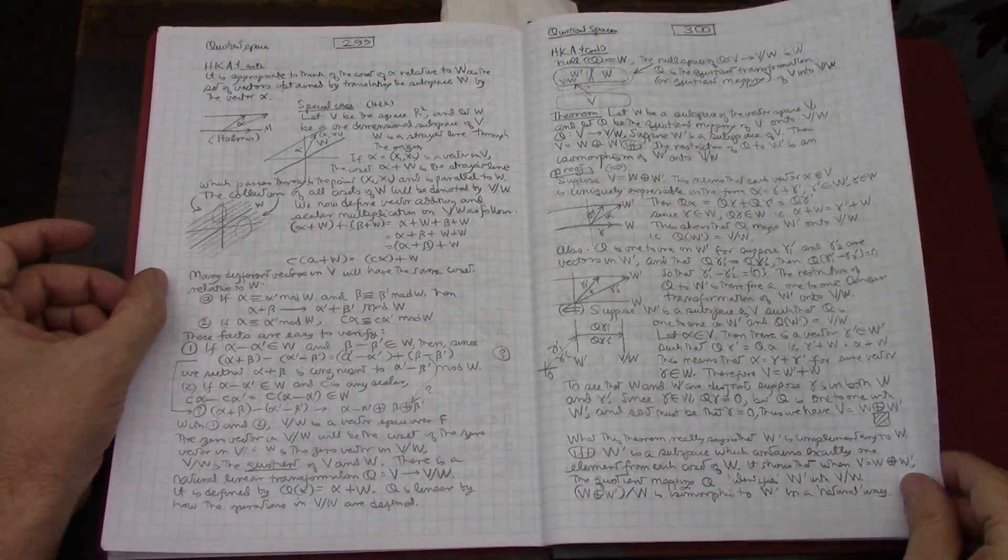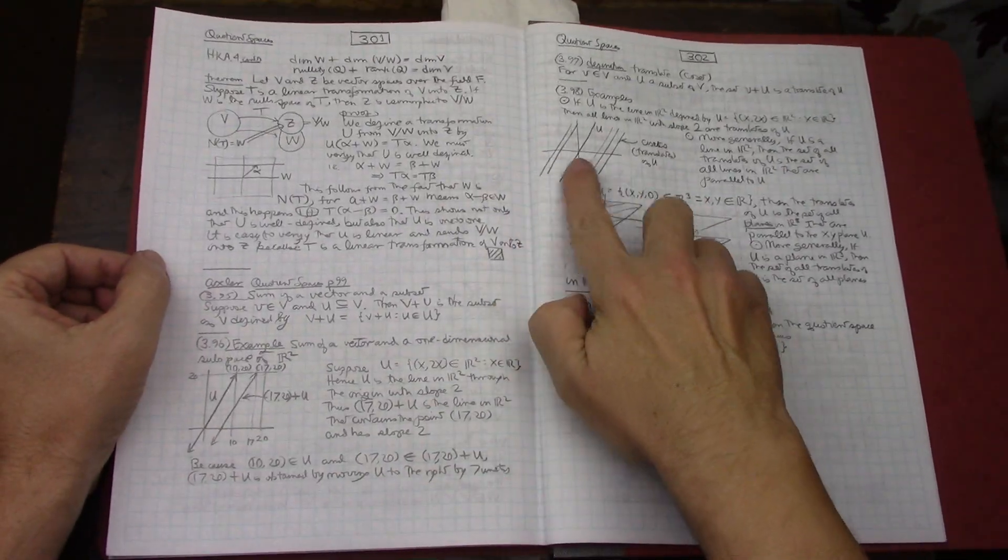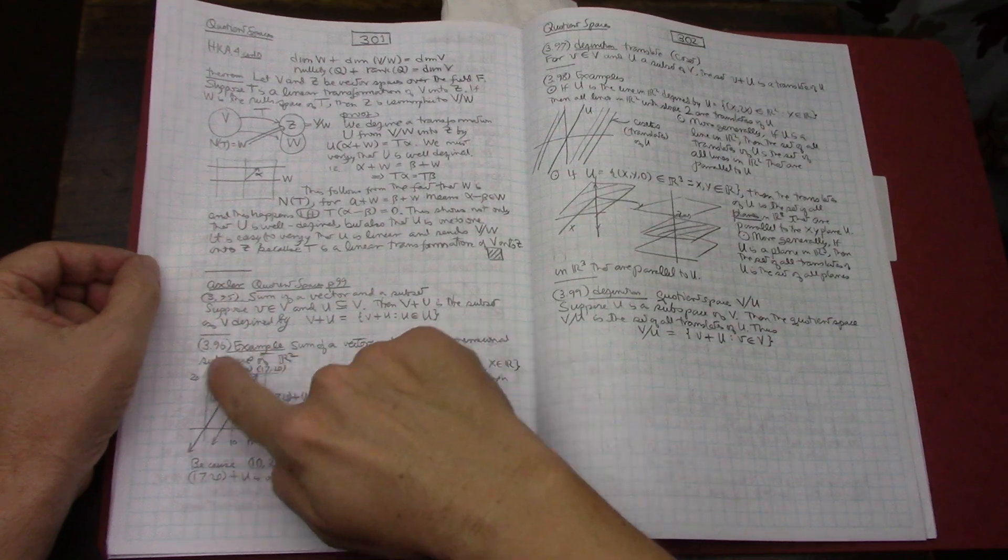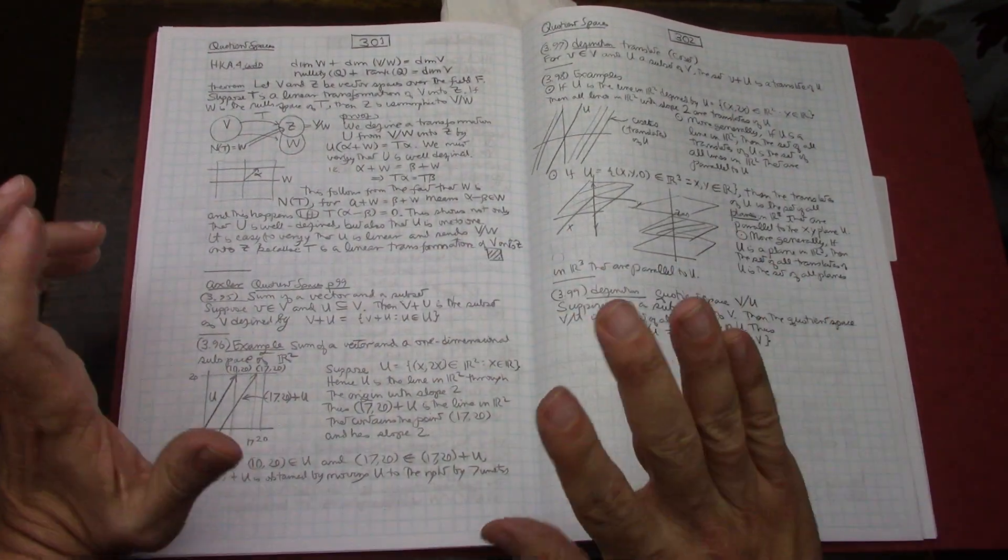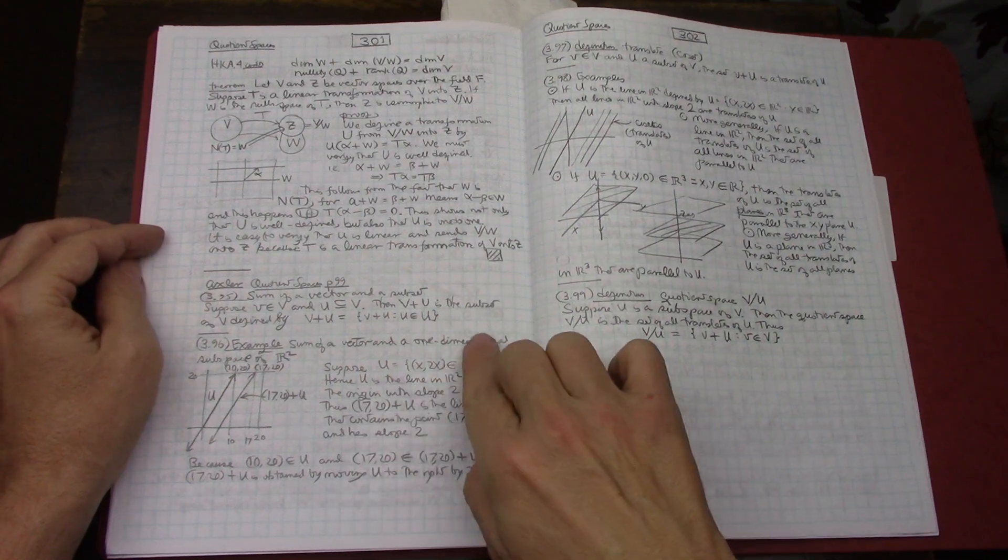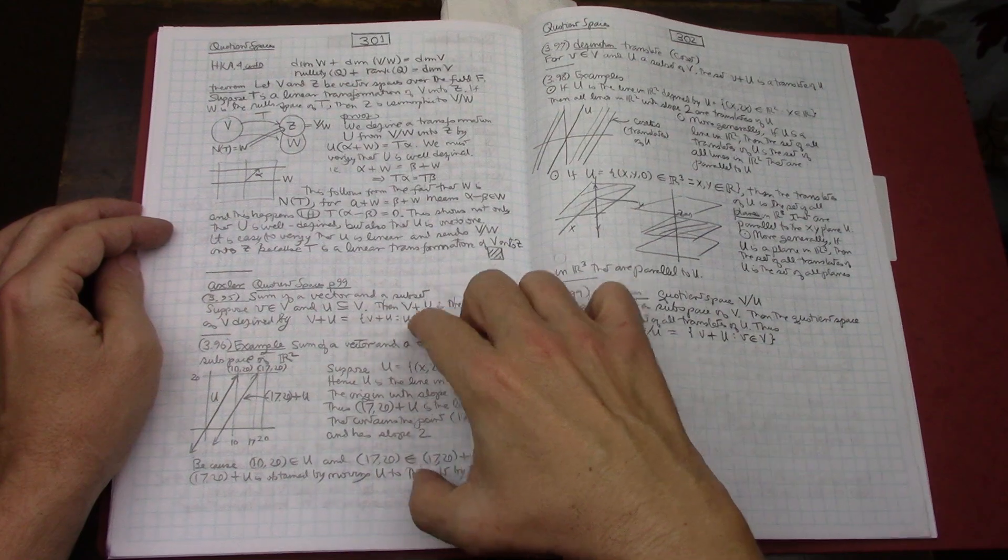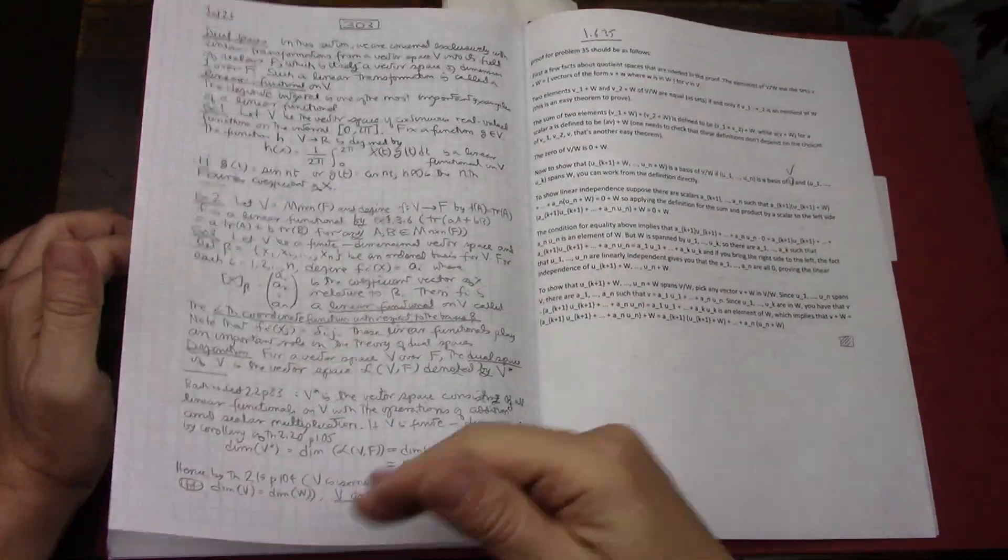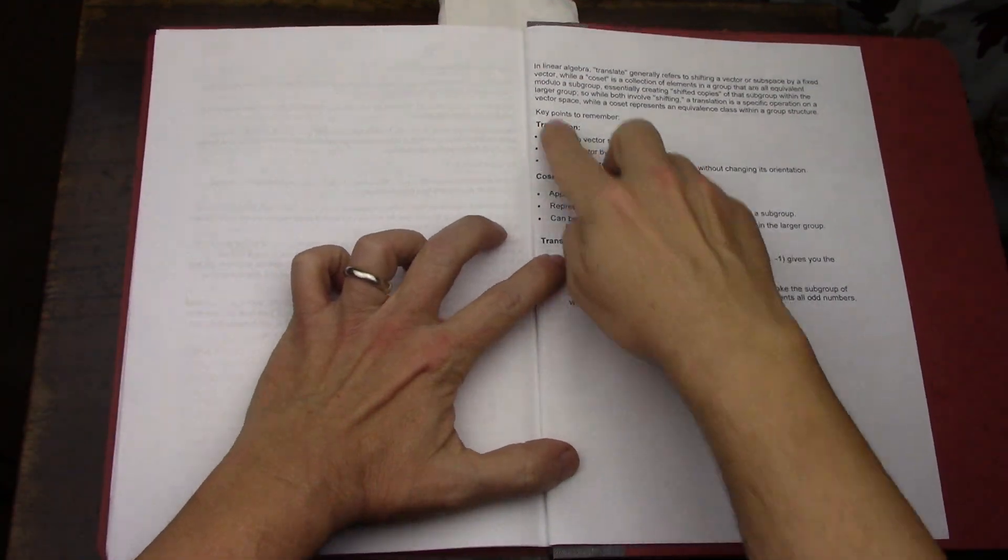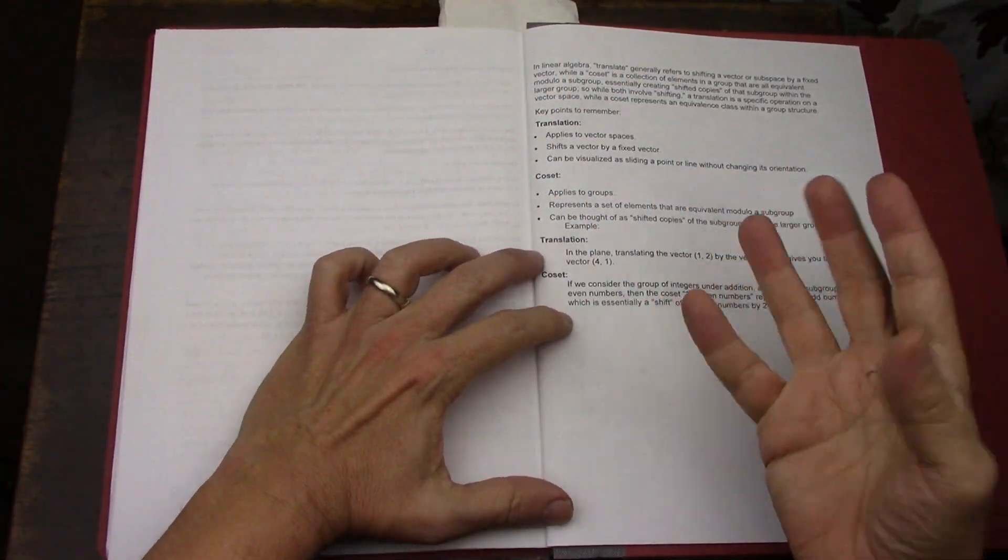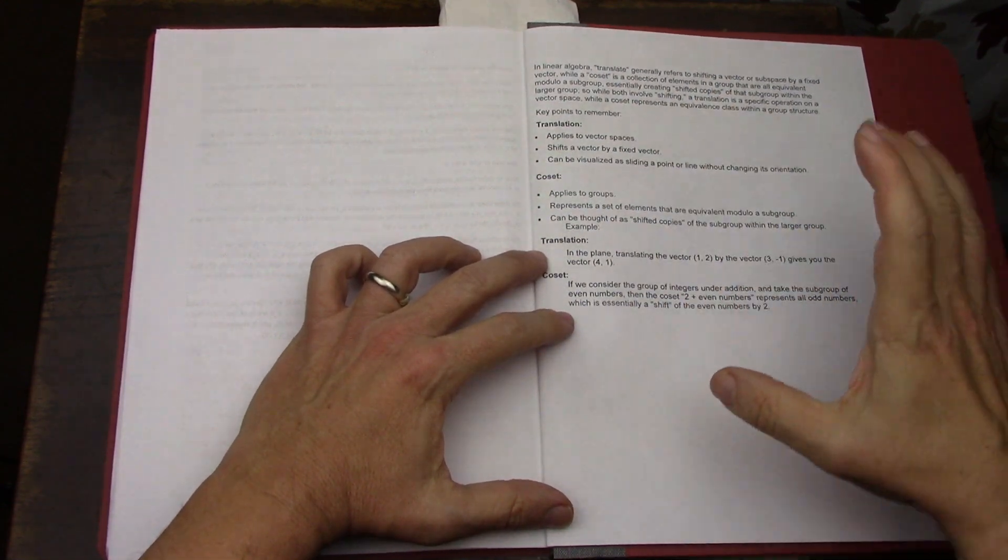Then in the case of Axler, Axler's got a really nice diagram with actual numbers and explains what a coset is. Now the only issue with Axler is that he decided to use the correct term, it is the correct term for a coset which is called a translate. And sure enough I dug this up out of Google, the AI thing that it has, and translate is the same as a coset.